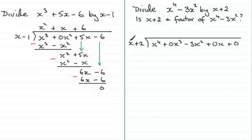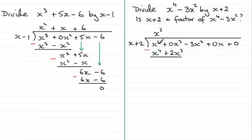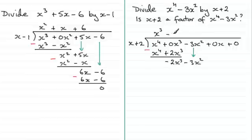In the usual way, what do we multiply x by to give x to the 4? That's x cubed. x cubed times x plus 2 gives us x to the power 4 plus 2x cubed. Subtracting: x to the 4 minus x to the 4 is 0, and 0x cubed minus plus 2x cubed gives minus 2x cubed. Bring down the next term, minus 3x squared. What do we multiply x by to give minus 2x cubed? It's minus 2x squared. So minus 2x squared times x plus 2 gives minus 2x cubed and minus 4x squared.